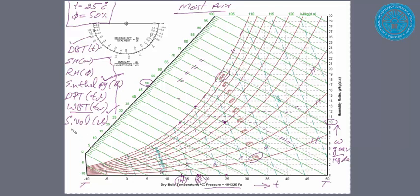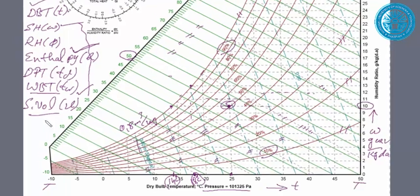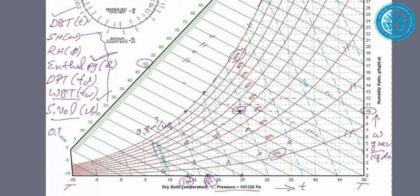And finally, the specific volume. So these lines for specific volumes, as I mentioned. This line is around 0.8 cubic meters per kilogram. This must be 0.82, 0.86 - sorry, 0.84, 0.86. So this is somewhere 0.858 or 0.86. That's acceptable range. Specific volume: 0.86 cubic meters per kilogram.